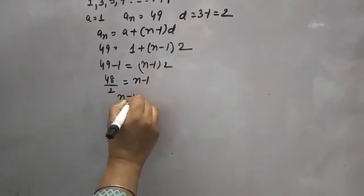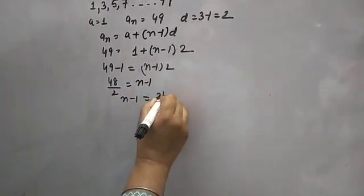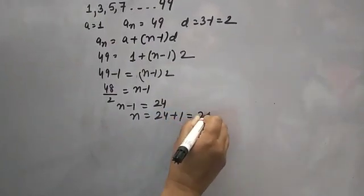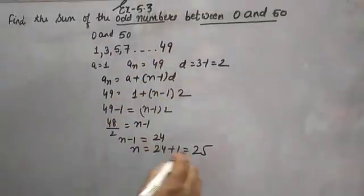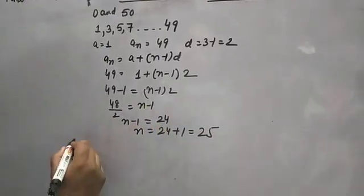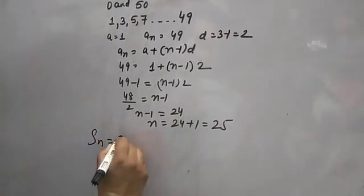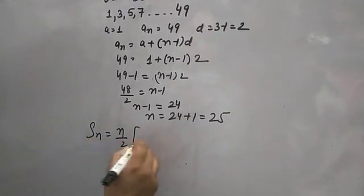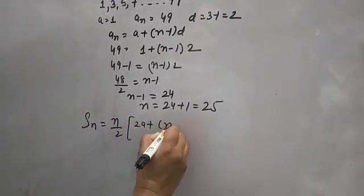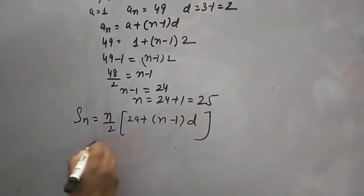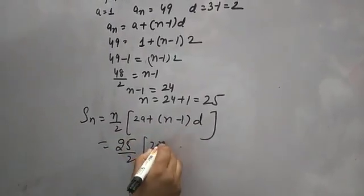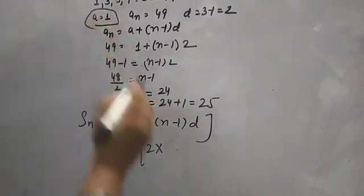So N minus 1 = 24, which means N = 25. The sum of N terms is equal to N by 2 into [2a + (N minus 1) into d]. With N = 25 and a = 1.